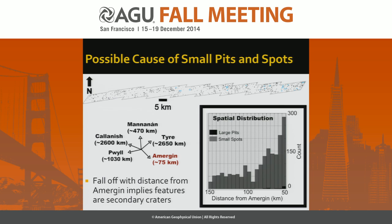Another important thing to take away from the histogram is a notable indent right where our large chaos region is in the high resolution. This could mean a few things: that the chaos region is younger; that there's been more thermal relaxation of the craters, making them harder to see; or that the albedo change is making it hard to observe these small pits and spots in this region.